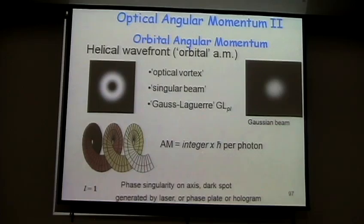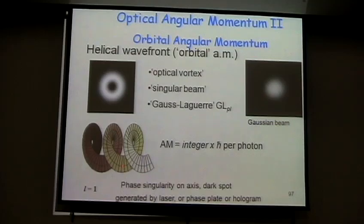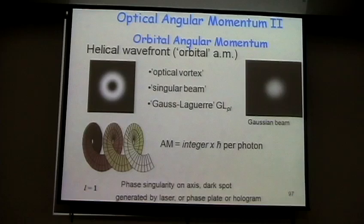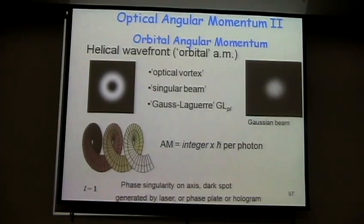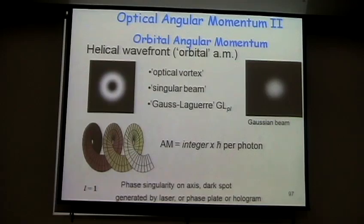This is how the beam looks — it always carries angular momentum quantized as integer multiples of h-bar per photon. This is a Gauss-Laguerre beam of charge 1: a simple helix with a phase singularity on axis and a dark spot in the middle. It can be generated by a laser, a phase plate, or a hologram. There is a phase singularity in the middle, a dark spot, and a ring of light around it. It can be linearly or circularly polarized, adding or subtracting one h-bar of angular momentum.